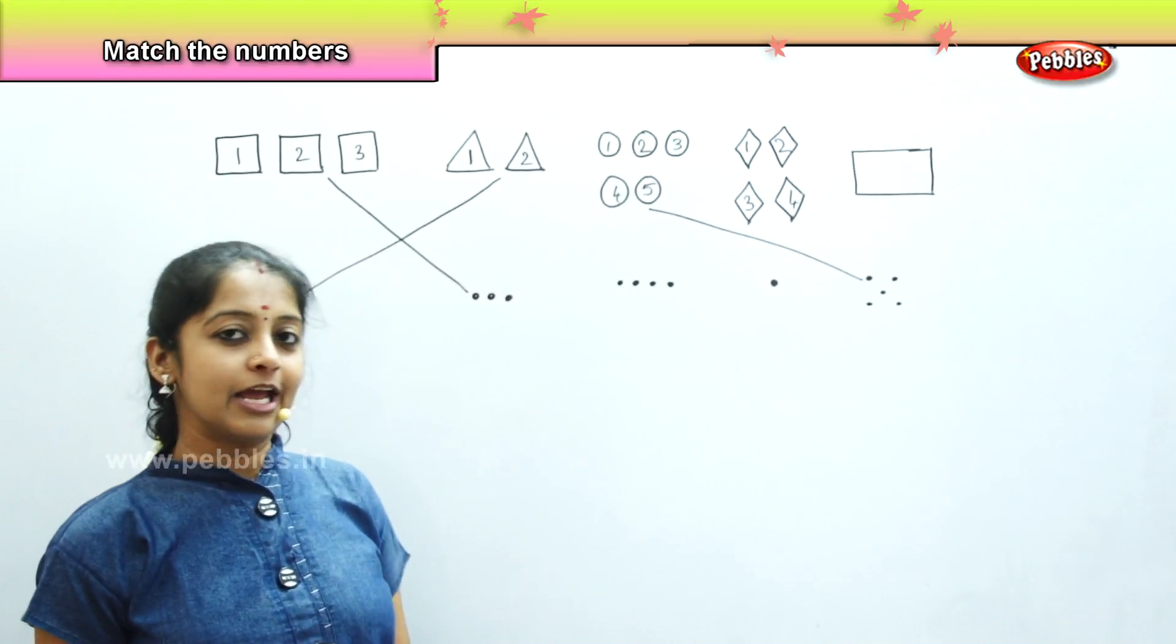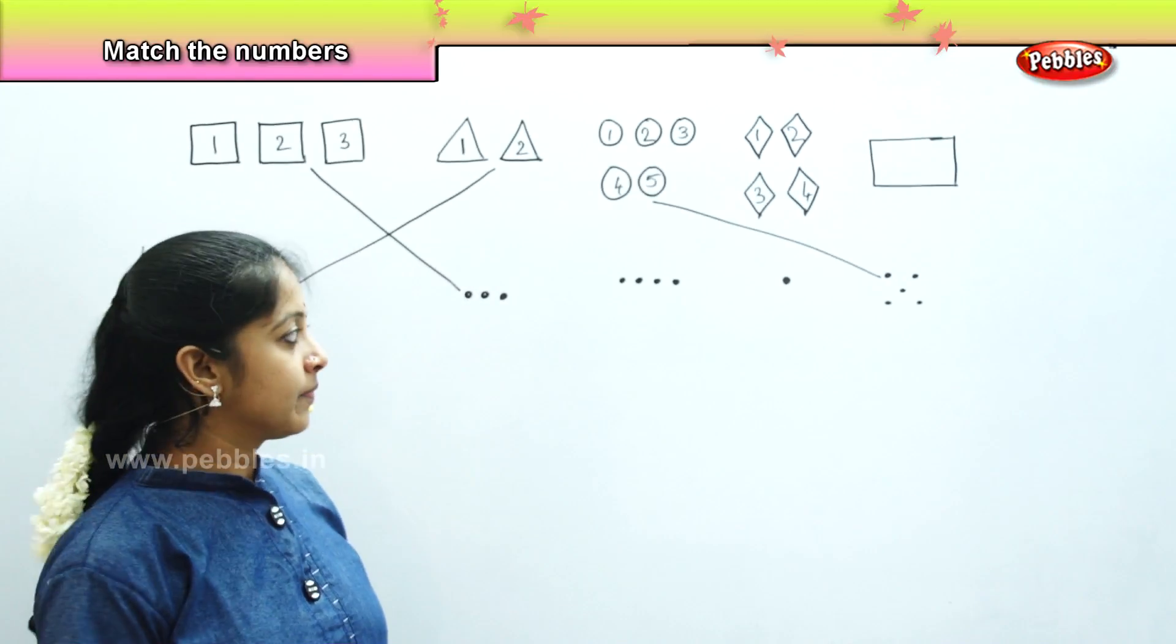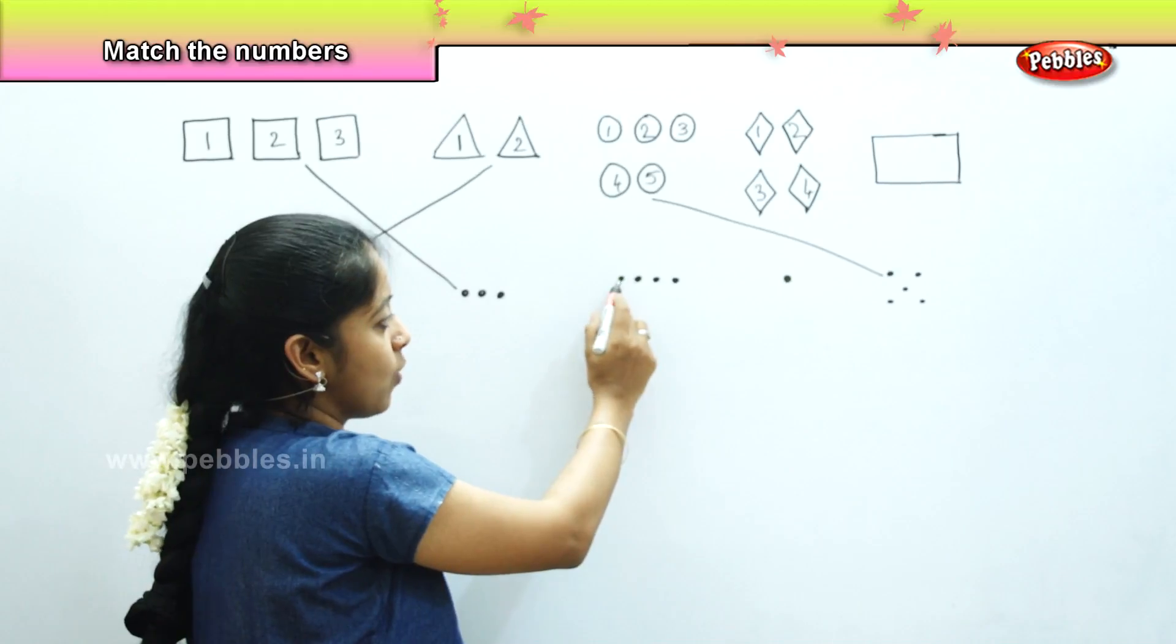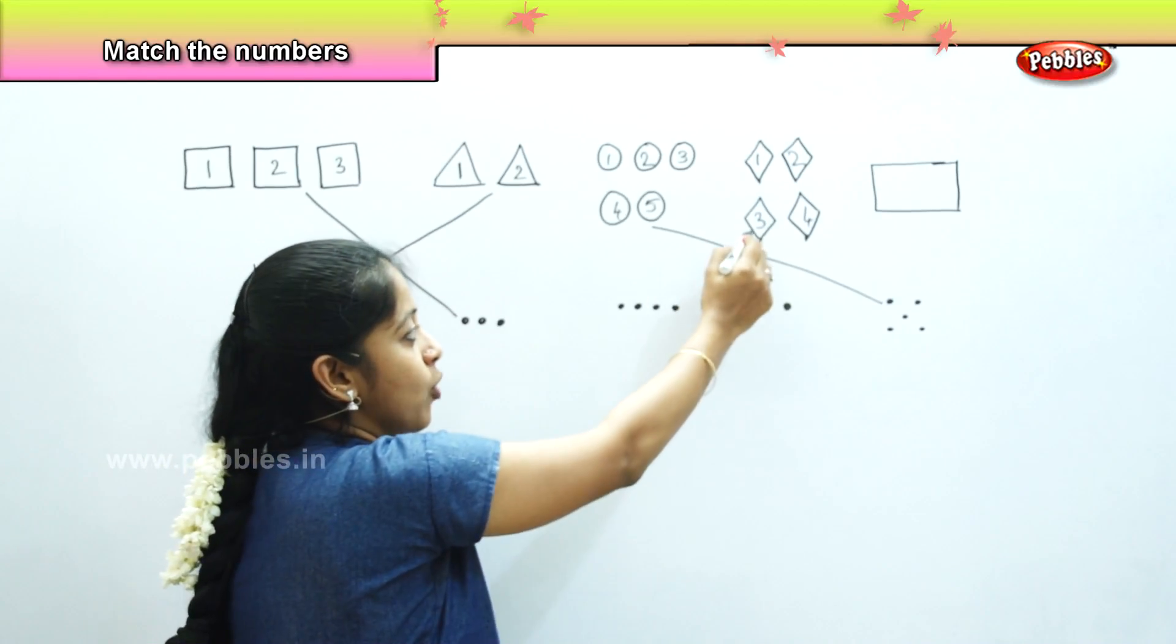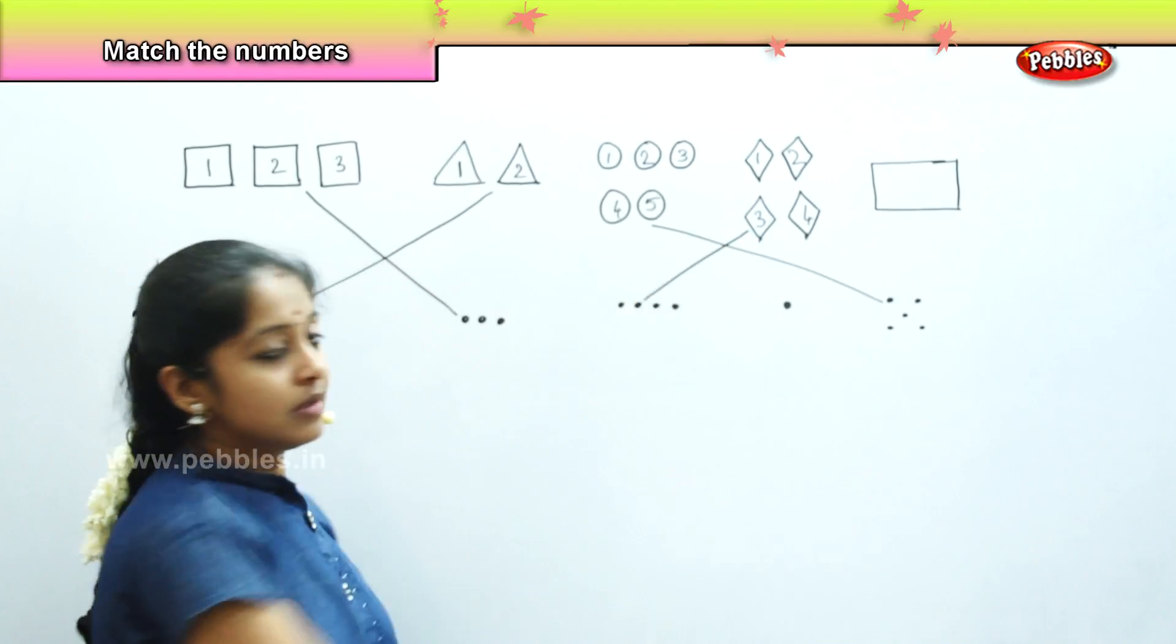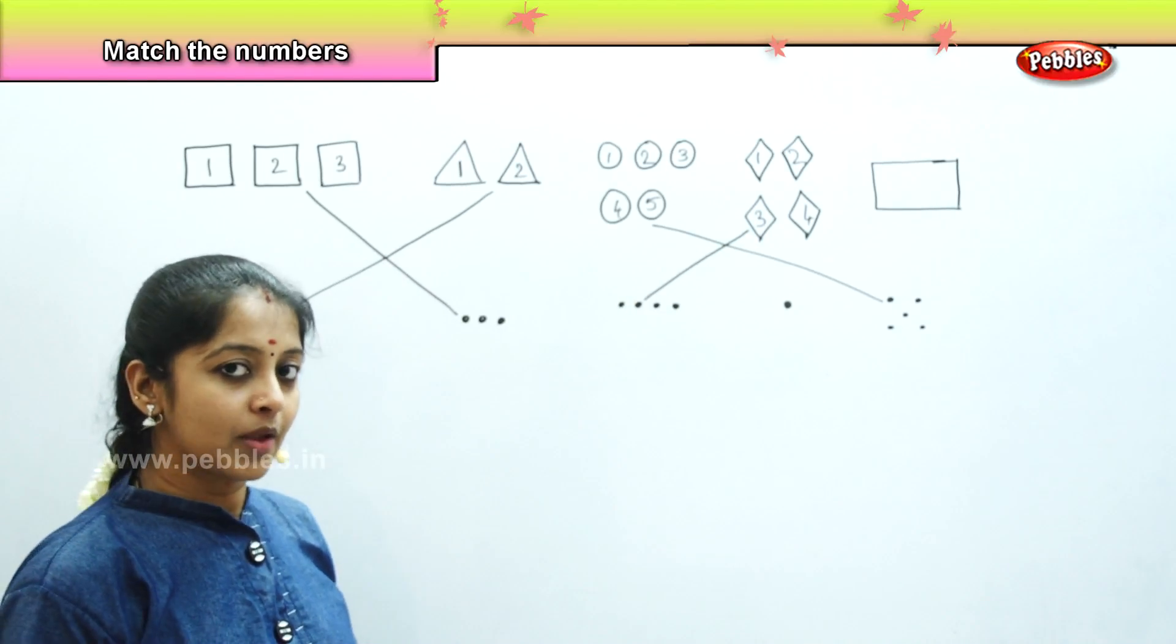So, can we find any 4 dots here? It is over here. How many dots are there? 1, 2, 3 and 4. So, we will match these dots with these diamonds. Right.